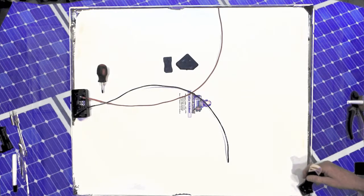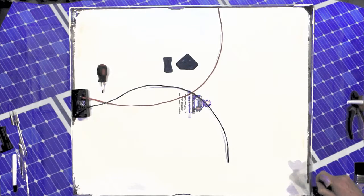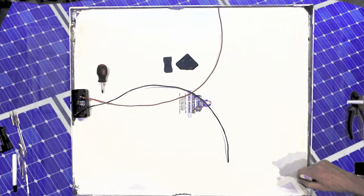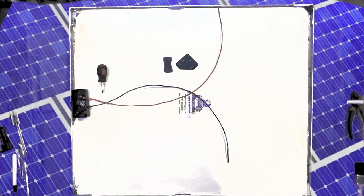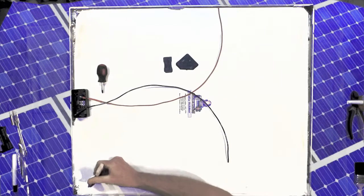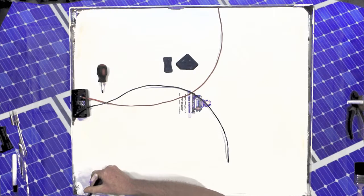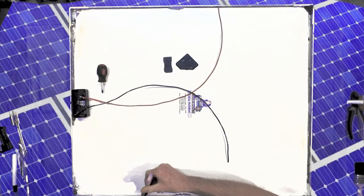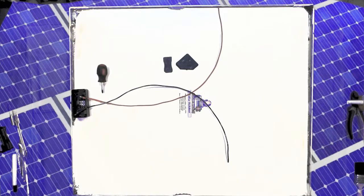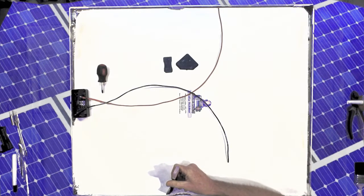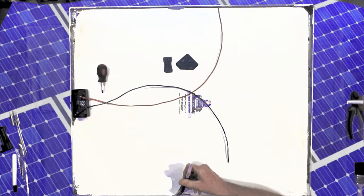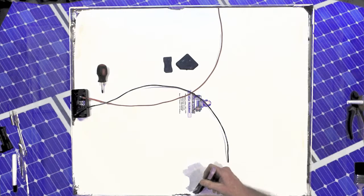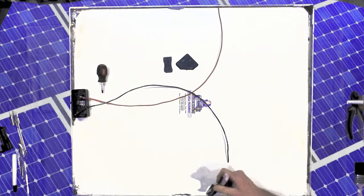Because just as we're sealing the Tedlar backsheet to the substrate, we then want to go back and seal the project box to the Tedlar. And that's just a bead around the edges of the project box, as well as a healthy glob underneath it, which, when we press down the project box, that silicone will spread out and bond the entire surface of that project box with the Tedlar, so you'll have a good seal. Because that is a point of entry for water, just as any one of the portions of the edge where it meets the frame.